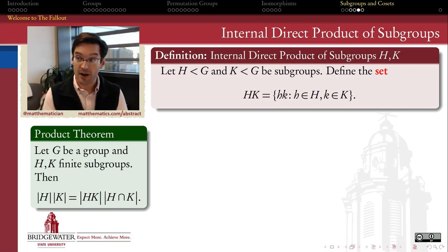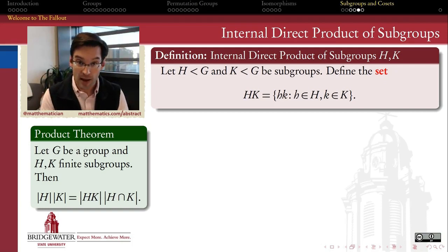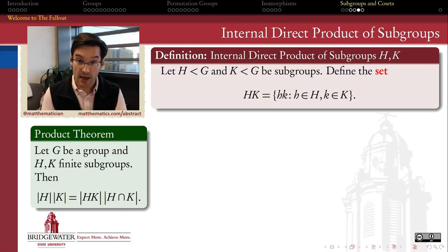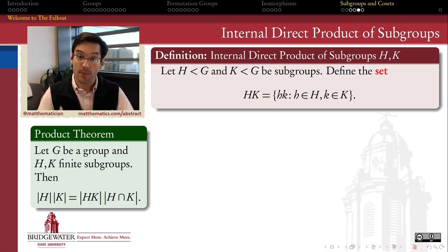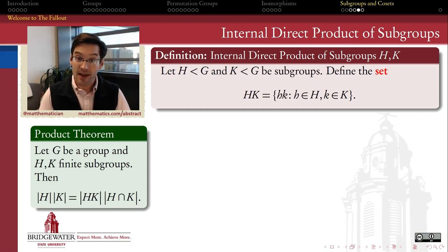So be extra super careful. It turns out, in a couple of chapters from now, we'll come up with some necessary and sufficient criteria for H and K in order that H times K be a subgroup, and this will be one of our important tools for building up bigger groups from smaller ones. But for now, just remember that H times K is not necessarily a subgroup at all.